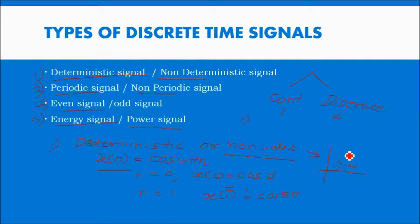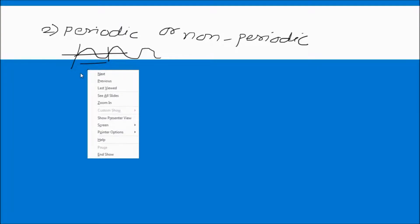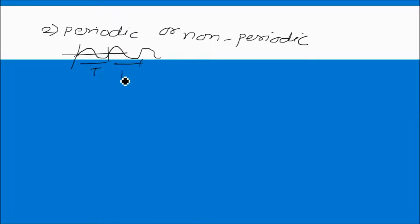The second type is periodic or non-periodic. Periodic means the signal repeats after equal intervals — for example, a sine wave repeats after equal intervals. Non-periodic means the signal does not repeat after any equal interval, so there is no interval at which the signal repeats.